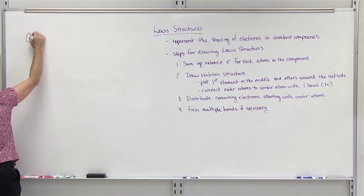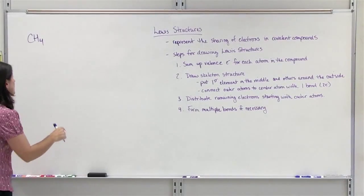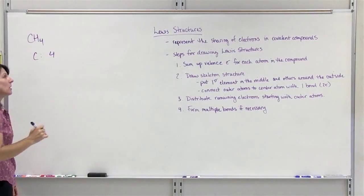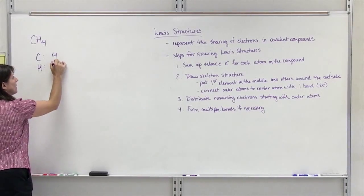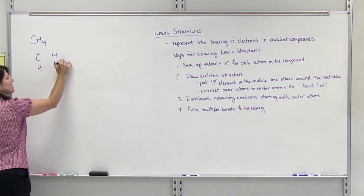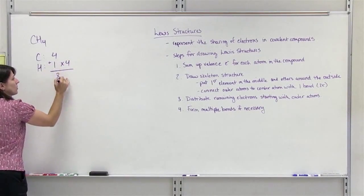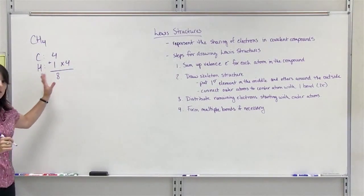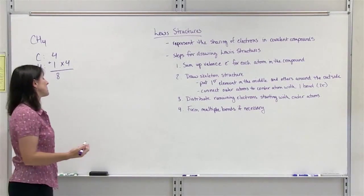The first compound we're going to do is methane, CH₄. First step: sum up the valence electrons. Carbon is in group 4A, so it has 4 valence electrons. Hydrogen is in group 1A and has 1 valence electron. There are 4 hydrogens in the compound, so we multiply by 4. Adding them up, we have 8 electrons to distribute and share amongst all the atoms so that everybody has a full set of valence electrons.